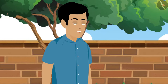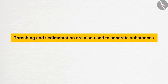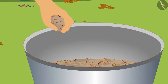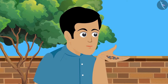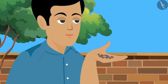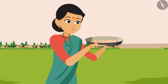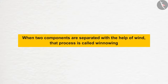Very good. Separation of substances is done by many such processes. What are the other processes? Threshing and sedimentation are also used to separate substances. Rohit bhaiya pulled out some pebbles from the tub in his fist. Along with the pebbles, some sand also came into his hand. He opened his fist, blew on his hand, and all the sand flew away while the pebbles remained. This also happens when wheat grains are cleaned in the house — all the lighter particles fly away. This process is called winnowing. When two components are separated with the help of wind, that process is called winnowing.